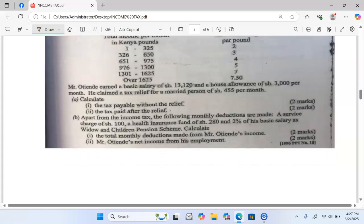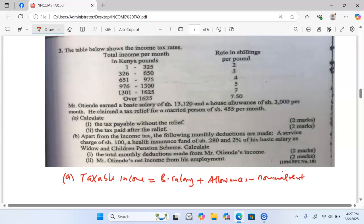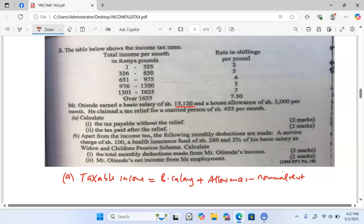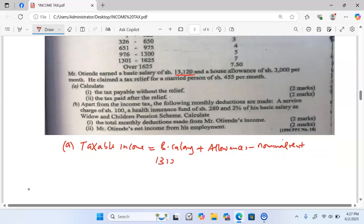So we start by first getting the taxable income. And taxable income is usually given by taking the basic salary, you add all the taxable allowances, you less what we call nominal rent, usually for the people who are given free housing by the employer.